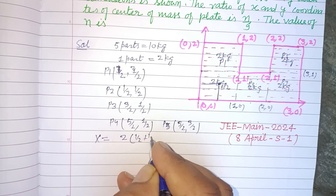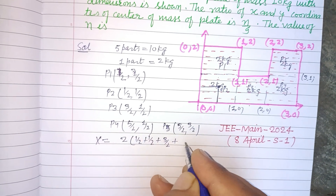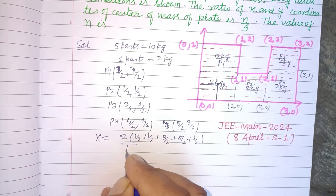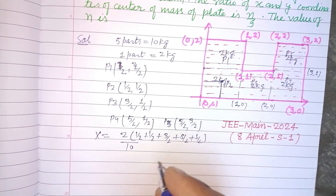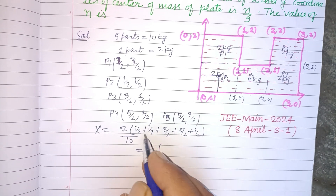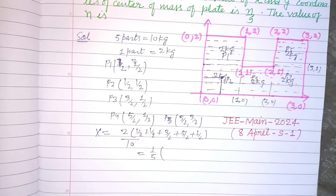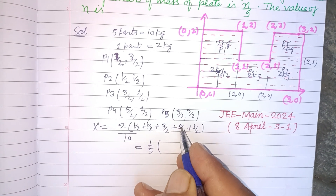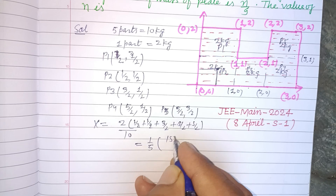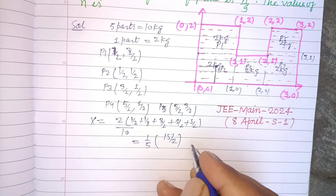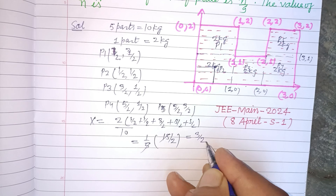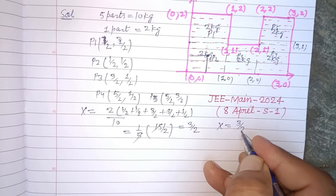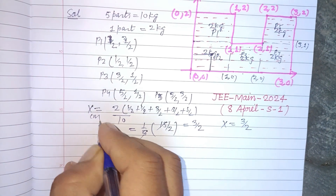The x-coordinates are 1/2, 1/2, 3/2, 5/2, and 5/2, divided by total mass 10. Summing: 1/2 + 1/2 + 3/2 + 5/2 + 5/2 = 15/2. So the x-coordinate of the center of mass is (15/2) / 10 = 3/2.